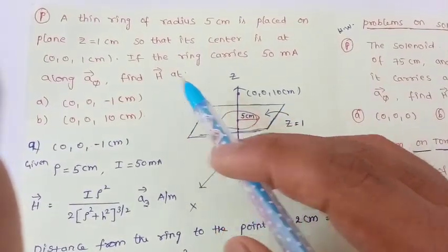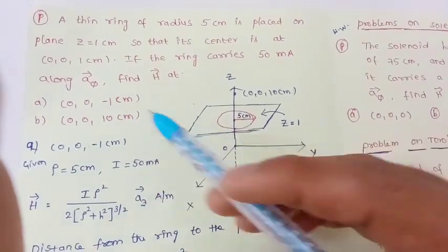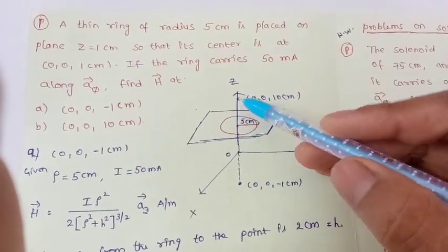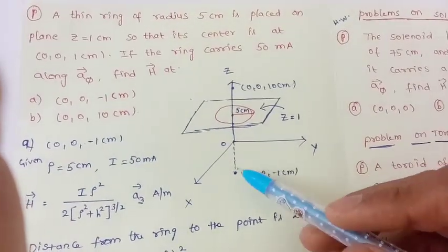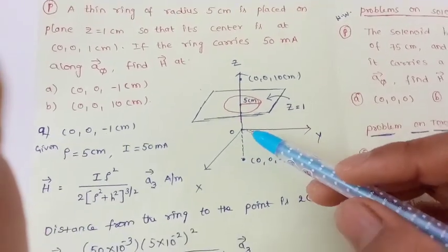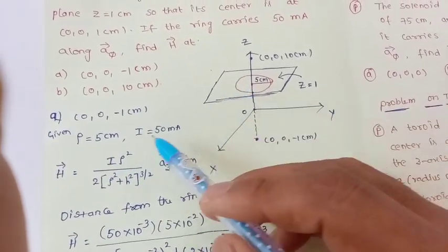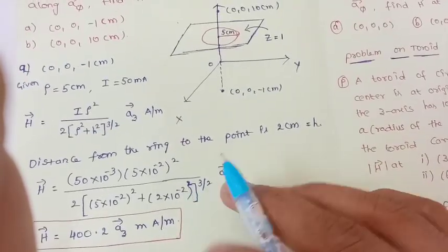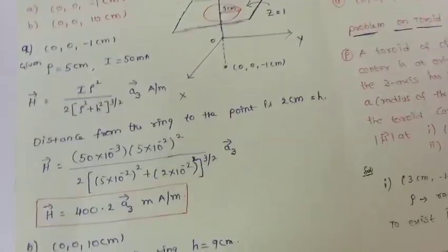We need to find H at (0, 0, −1 cm). Observe that the ring is at z = 1 cm and the point is at z = −1 cm. The distance from the ring to the point is 1 + 1 = 2 centimeters, so h = 2 cm. With ρ = 5 cm and I = 50 milliamperes, substituting into the formula gives the H value.